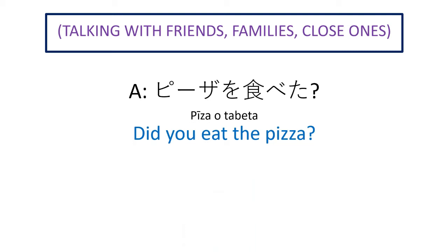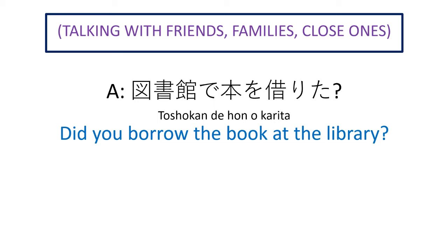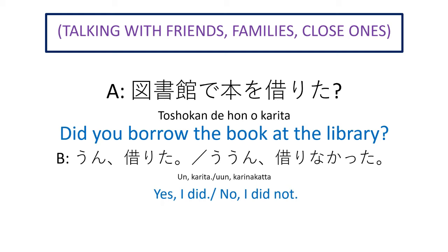When talking with friends and family, of course we use the short form. For example: 'Pizza o tabeta?' — Did you eat the pizza? Answers: 'Un, tabeta.' Yes, I did. Or 'Un, tabenakatta.' No, I did not. 'Hon o karita?' — Did you borrow the book from the library? 'Un, karita.' Yes, I did. 'Un, karinakatta.' No, I did not. In Japanese we can include the verb itself in the answer: 'karita' or 'karinakatta'.